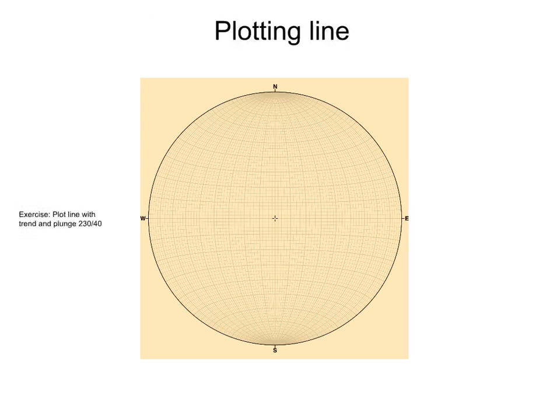Let's look first at how to plot a line. Let's say we want to plot a line with trend and plunge 230, 40. We first mark the trend of the line, in this case 230, on the primitive circle.